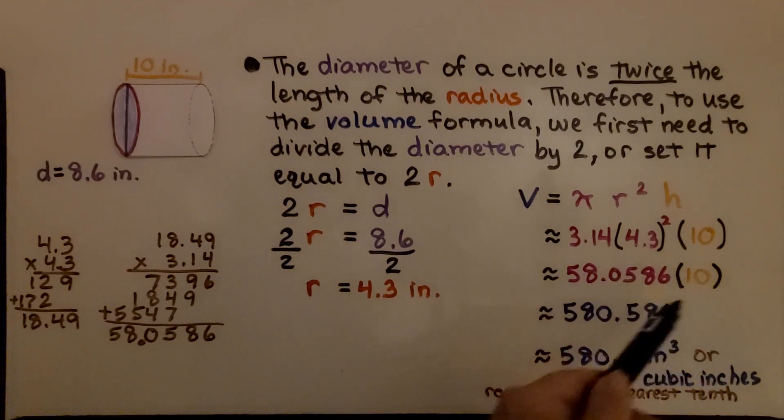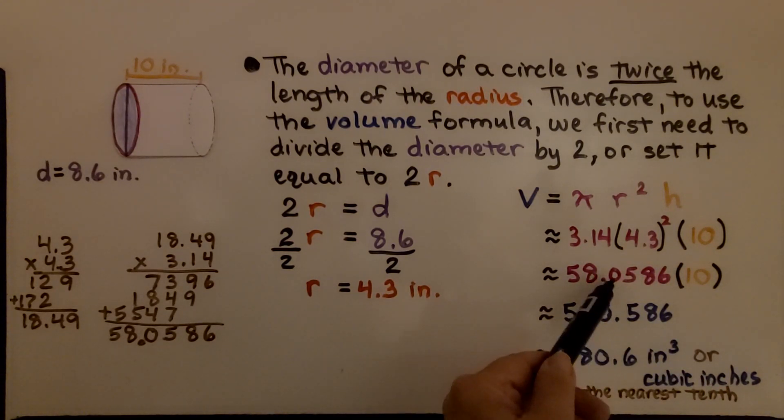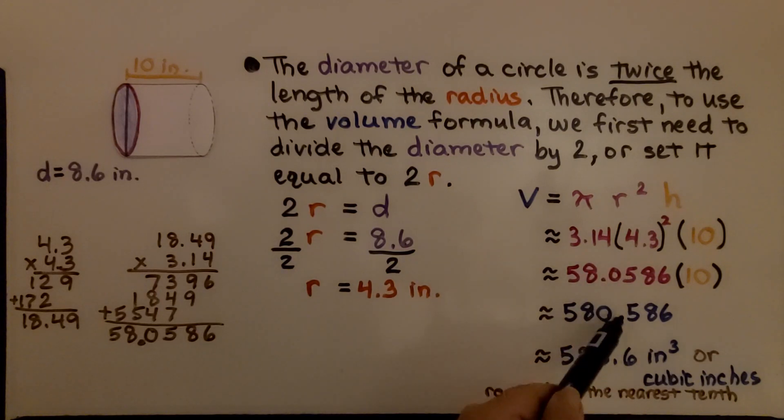We multiply that by 10, which is going to move the decimal point over one space to the right. So we have 580.586.